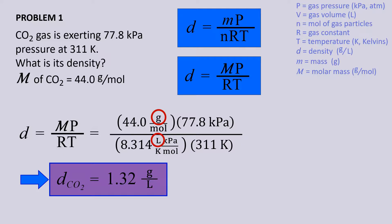The density of carbon dioxide under the given conditions is 1.32 grams per liter.